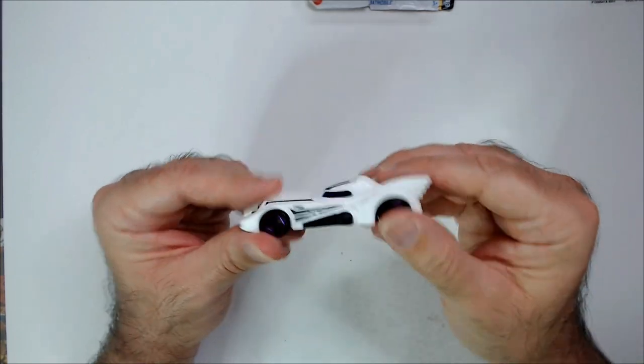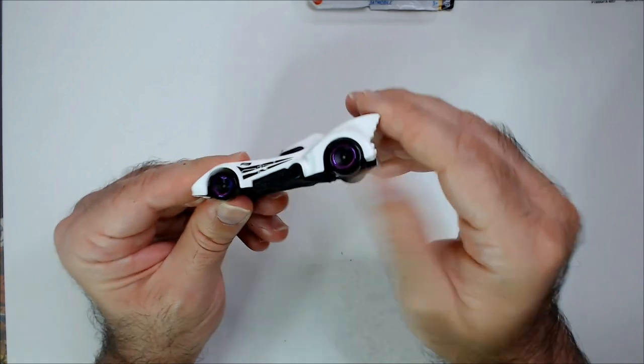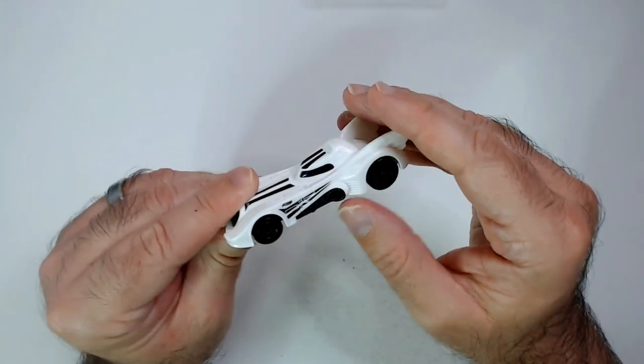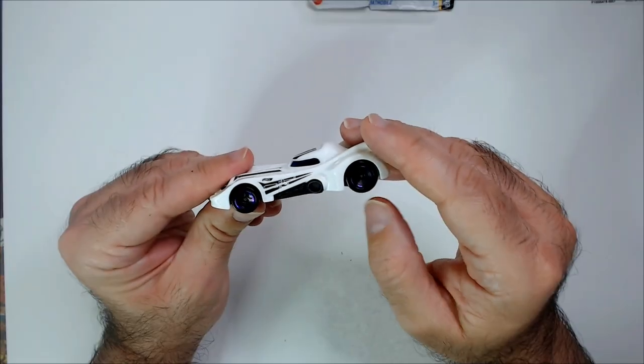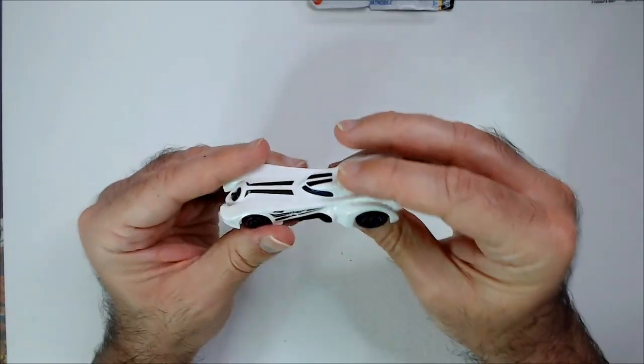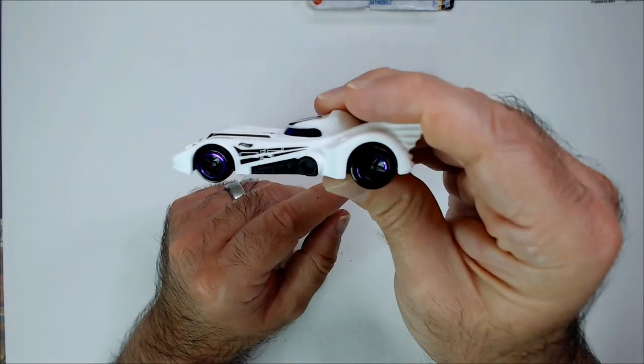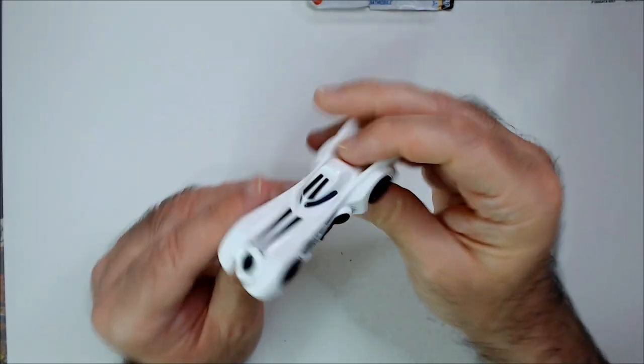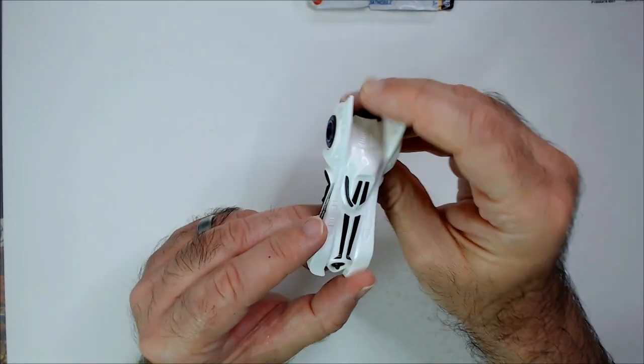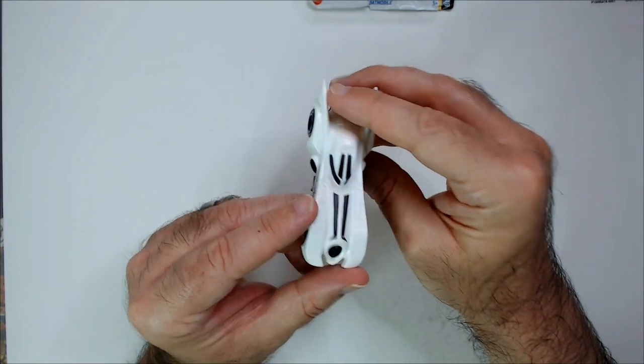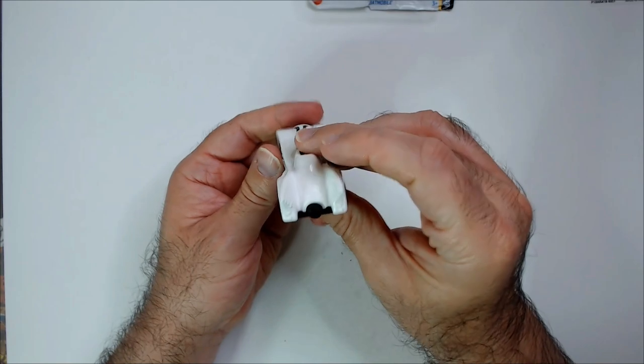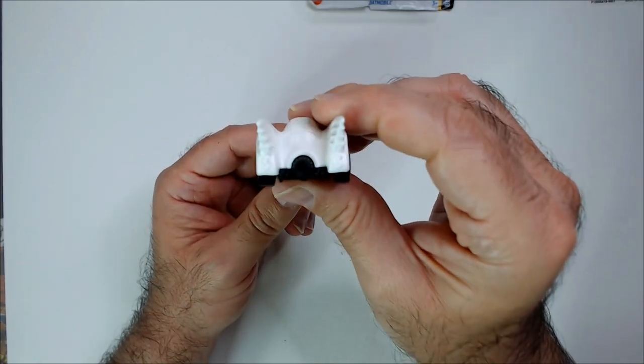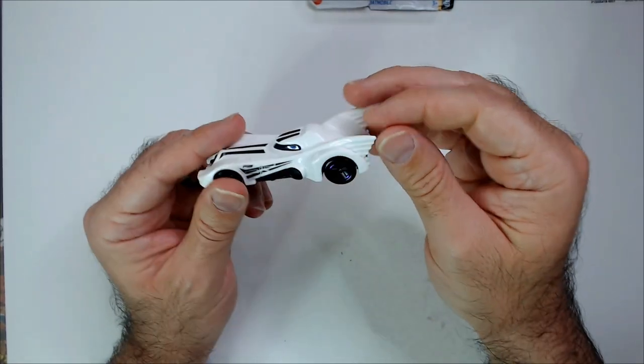And this is a good looking Hot Wheel. Got these cool purple rims here. Some detail. Hot Wheels logo. Some lines on top. Your front turbine looking thing here. Afterburner back there. Big white wings.